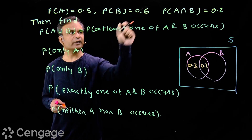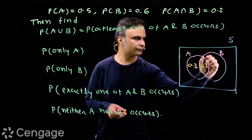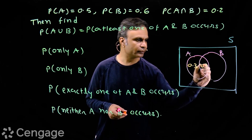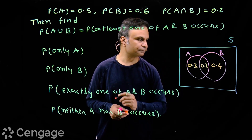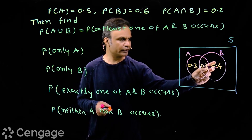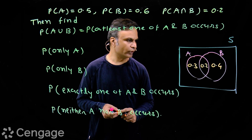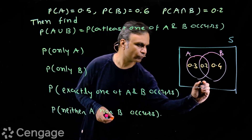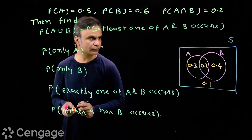Probability of event B is 0.6, and we already have 0.2 in the intersection region, so we put 0.4 in the only-B region. The sum 0.3 plus 0.2 plus 0.4 is 0.9, so we put 0.1 in the outer region outside A union B.